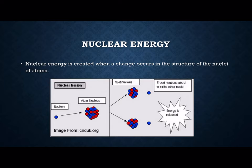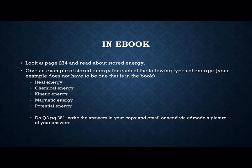Nuclear energy is released when changes occur in the structure of the nucleus, or nuclei, of an atom. There are two methods: nuclear fission and nuclear fusion. Both of these have the potential to release extremely large amounts of energy, and therefore it is known to be quite dangerous, especially if you get a runaway nuclear reaction.